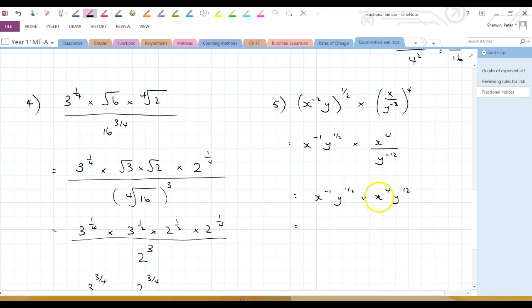See how useful this is becoming? Now I can add the powers of same basis. Minus 1 plus 4 is 3. And 1 half plus 12 is 1 half plus 24 over 2, which is 25 over 2. Useful here to think of whole numbers as fractions with common denominators so that you can add them together.